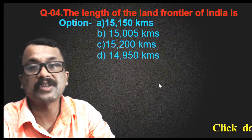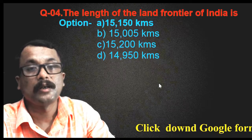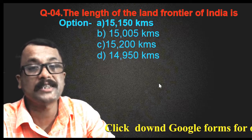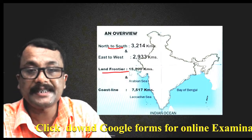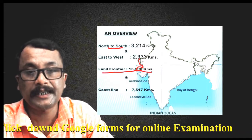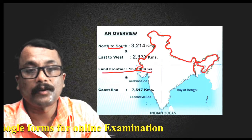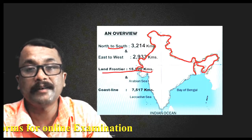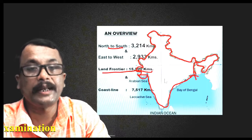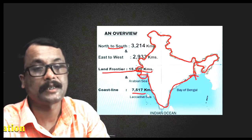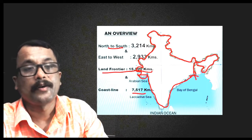Question number four: the length of the land frontier of India is — Option A: 15,150 km; Option B: 15,005 km; Option C: 15,200 km; Option D: 14,950 km. The land frontier is 15,200 km. As additional information, the coastline or water bodies frontier distance is 7,517 km — this may also appear in questions. The correct answer is option C: 15,200 km.